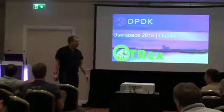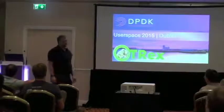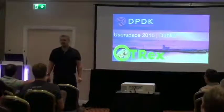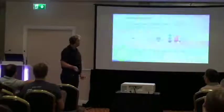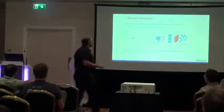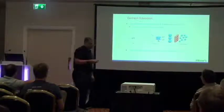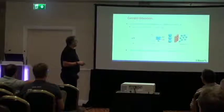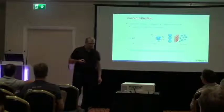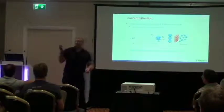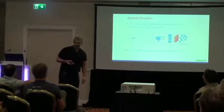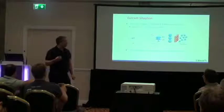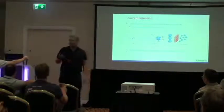I'm going to present TREX, which is a stateful traffic generator that we created. To give context, we are developing deep packet inspection at Cisco, and for many types of network elements there is expected traffic. We talked about deep packet inspection before — they are super complex and there is a need to get performance numbers and understand bottlenecks.